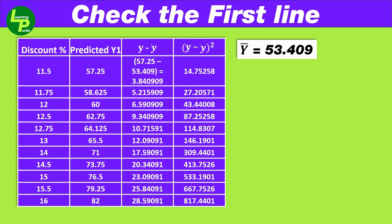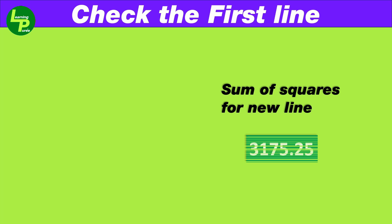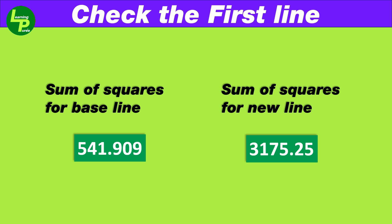The following table depicts the sum of squares for this line denoted by the equation y1 equals 5.5x minus 6. Substituting x values from our data, we calculate the new predicted value y1. We now compute the sum of squares for this line by comparing the new y values with the arithmetic average of the first line, that is y equals 53.409. Comparing the sum of squares of the baseline with the new line, we observe that the variation is way above the variation of the baseline and not comparable.